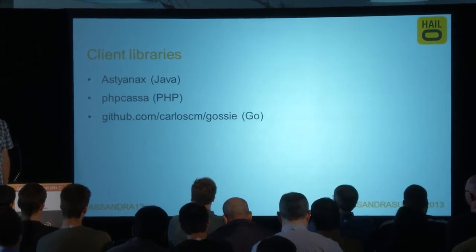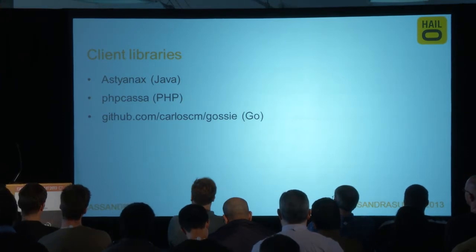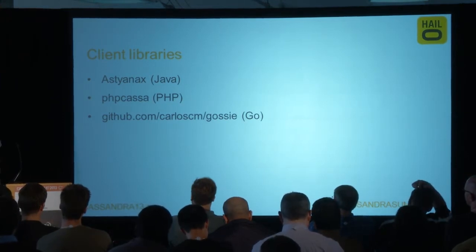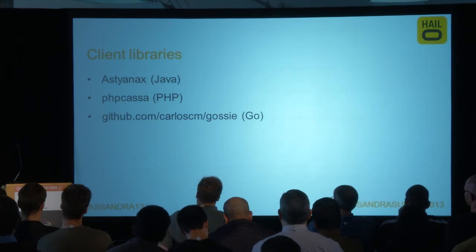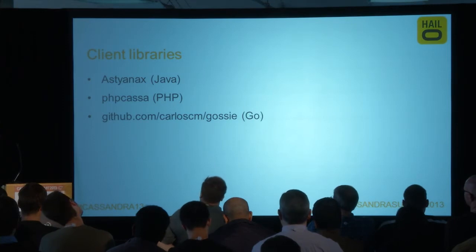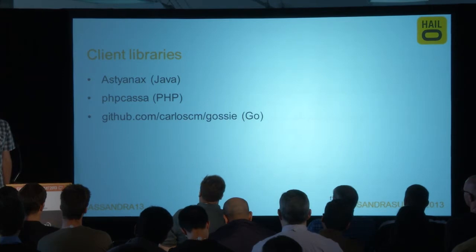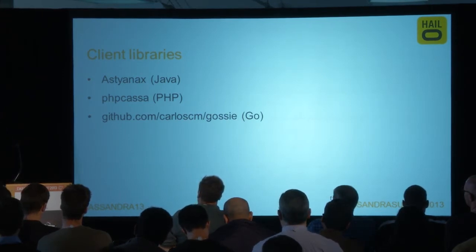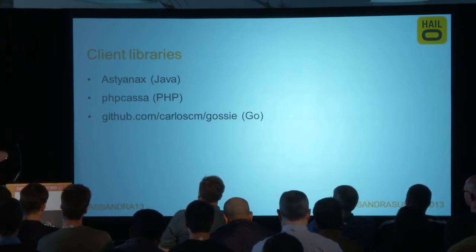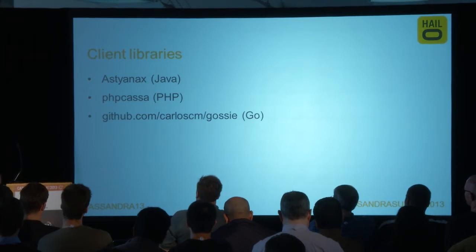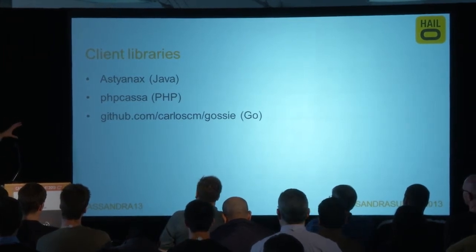The client libraries we're using at Halo: we use Astyanax, the Netflix open source Java client; PHP Casa for PHP; and Gossy for Go. We're not using CQL at the moment — we're using the older thrift-based RPC clients, which suits what we're doing right now. We might move to CQL in the future, potentially — there could be advantages especially around onboarding new developers — but right now we're using the thrift-style RPC clients.